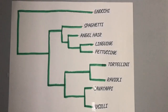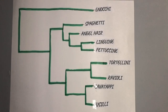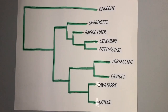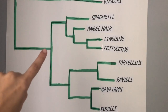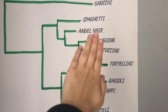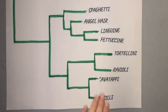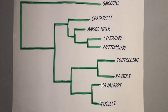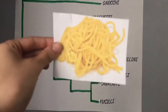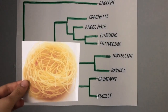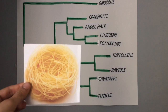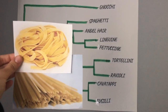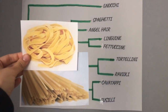Cladogenesis can help us determine the order of divergence for these pasta types. Let's go through the pasta types and see how each shape evolved. From the common ancestor, it diverged into the long pasta shapes and the shorter pasta shapes. Starting with the long pasta shape, we have spaghetti, which is the standard long pasta, and we can see that it diverged first. It is also related to angel hair pasta, which is just a thin spaghetti. Then we see a divergence of flat long pasta, and both linguine and fettuccine are flat.